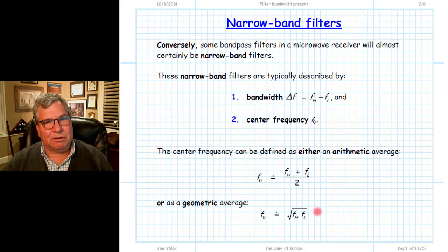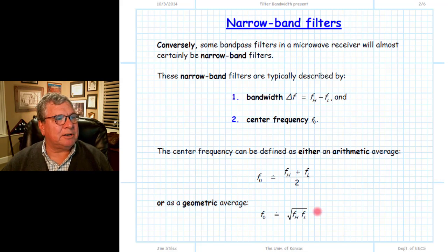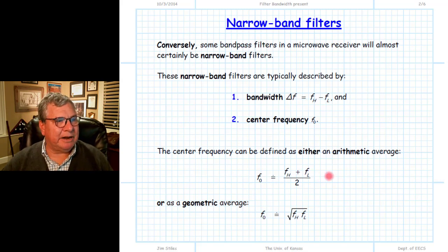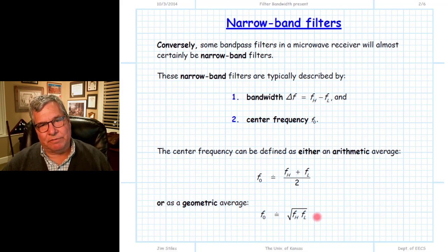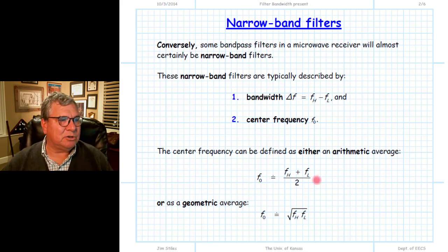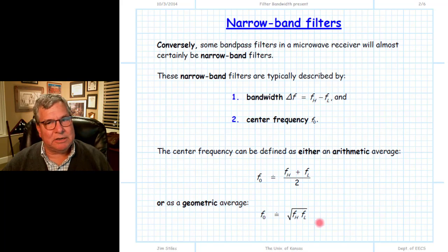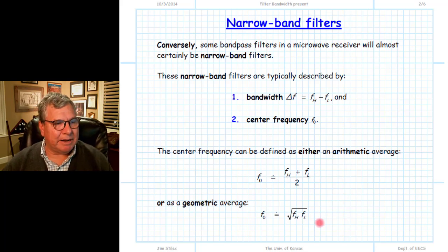Having said all that, for the most part, particularly if we have a narrowband filter, the difference between the arithmetic average and the geometric average in terms of their numeric value is fairly slight. So usually a distinction between the two is not always made.